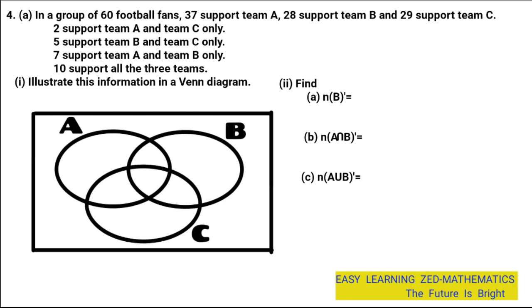Now let's put the information into the Venn Diagram. First, start at the middle point — find the value for A intersection B intersection C, which is the number of fans that support all 3 teams. That is 10, so write 10 at the center intersection of A, B, and C.